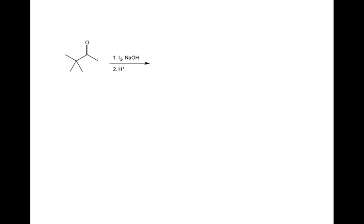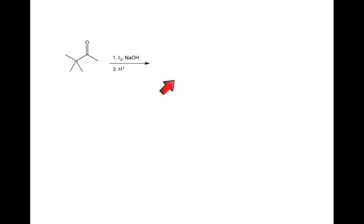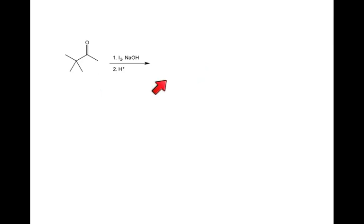For class, I'd like you to solve this problem — it's very simple, exactly the same as what we've shown. Draw both products: the main product from the ketone and also the haloform. Draw both products and bring this into class.